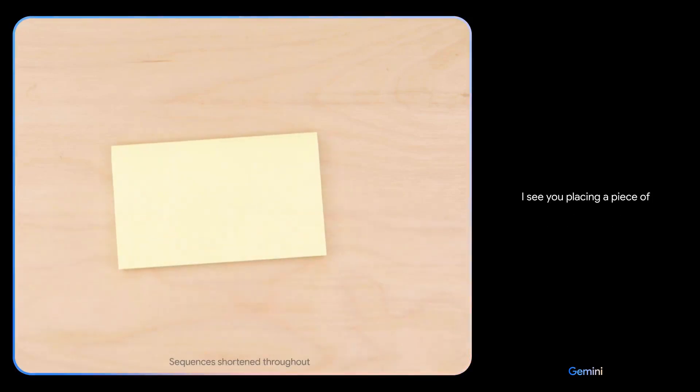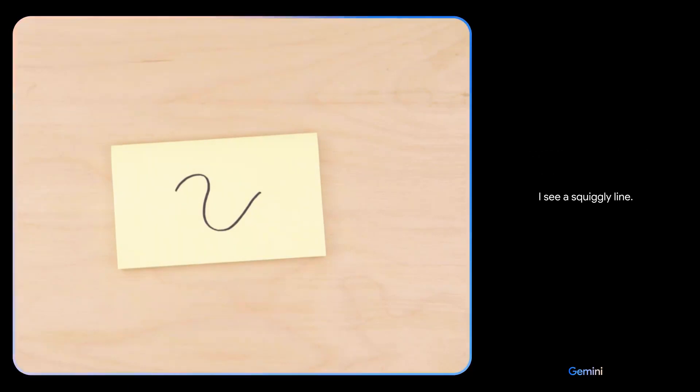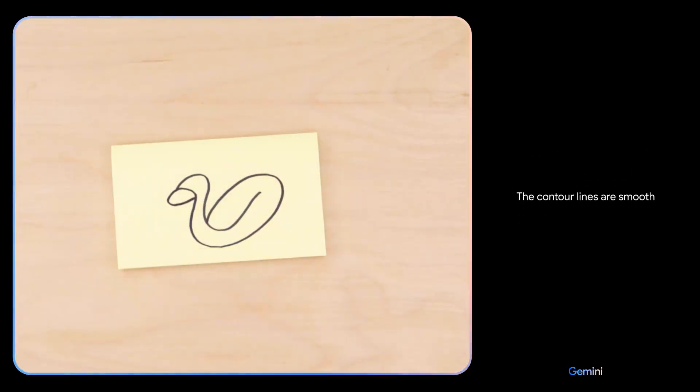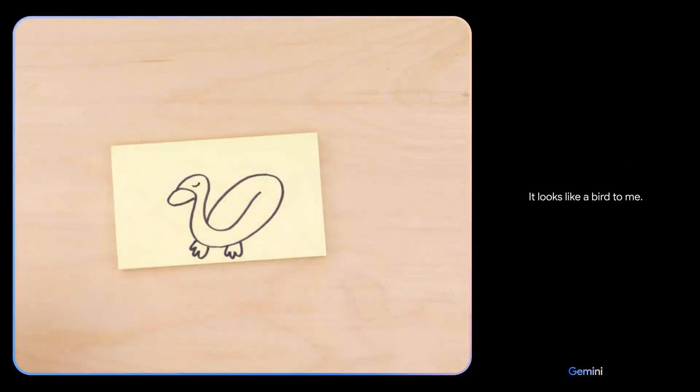All right. Testing Gemini. Here we go. Tell me what you see. I see you placing a piece of paper on the table. I see a squiggly line. What about now? The contour lines are smooth and flowing, with no sharp angles or jagged edges. It looks like a bird to me.